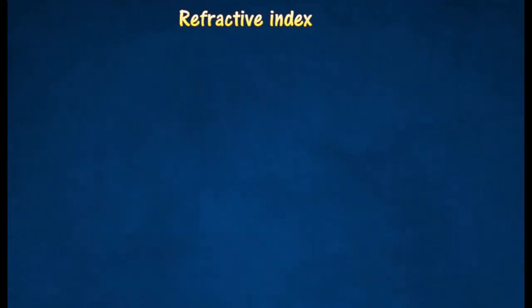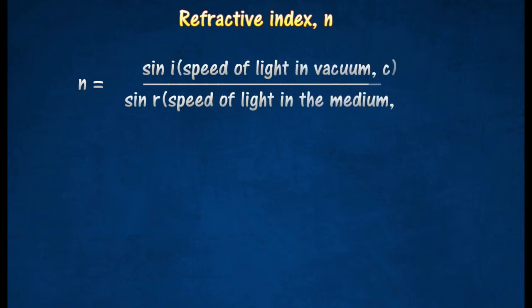The ratio sin I over sin R for a light ray passing from one medium to another is called the refractive index of the second medium with respect to the first, N.